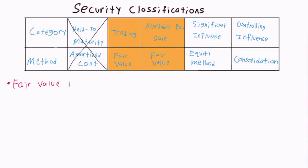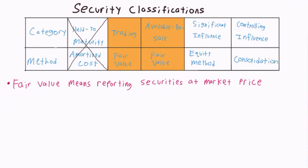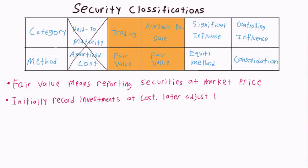When we say fair value, we essentially just mean the current market price of the security. So reporting at fair value means reporting our securities at the price that they can be sold for on the market. The fair value procedure initially records investments at cost, or the amount paid for the investment, which is later adjusted to the market value, or fair value, at the end of the period.